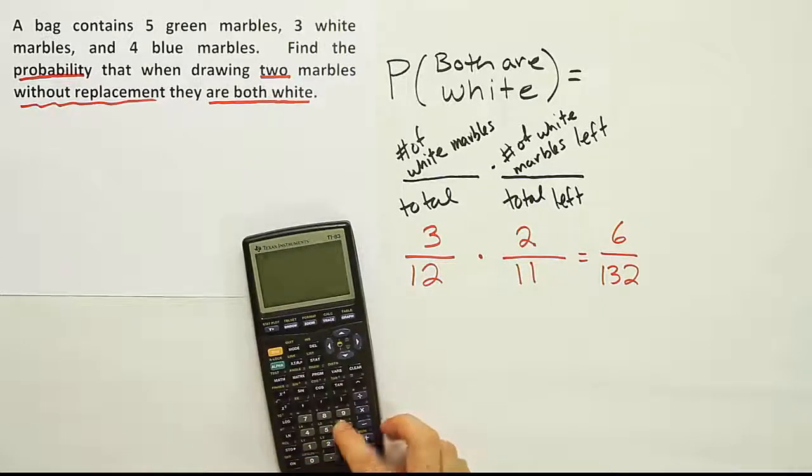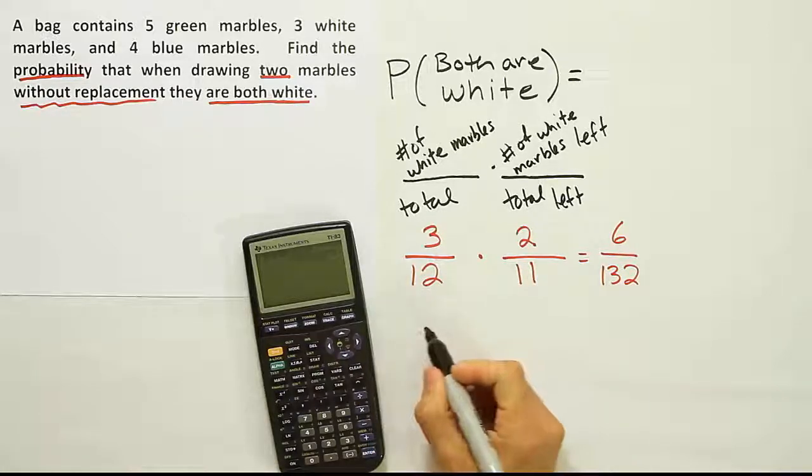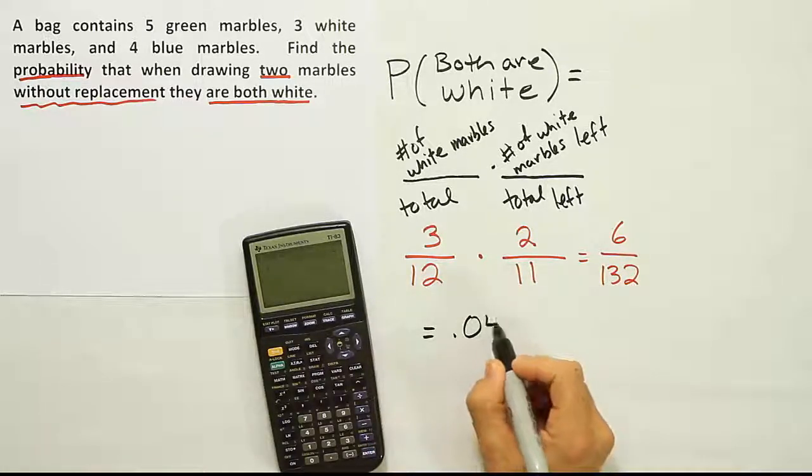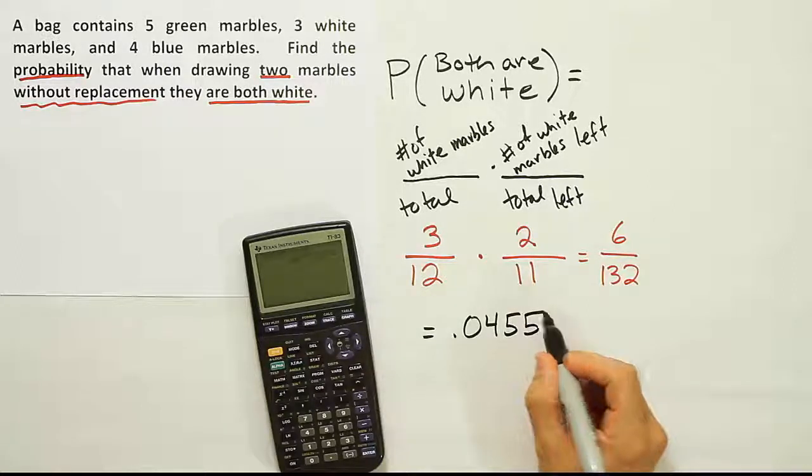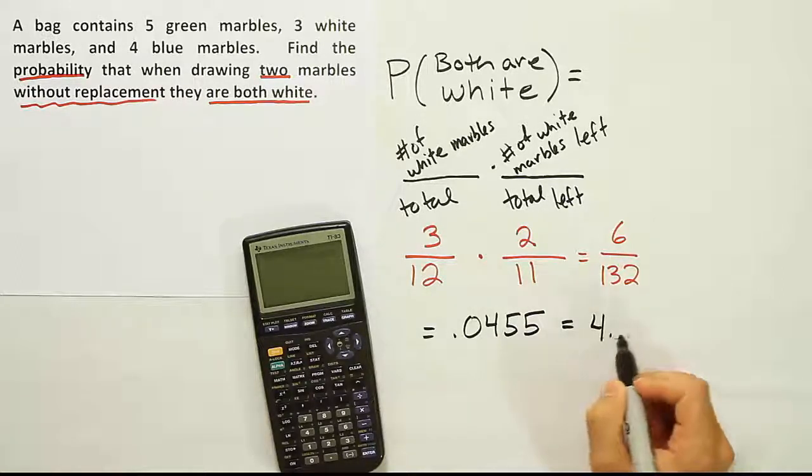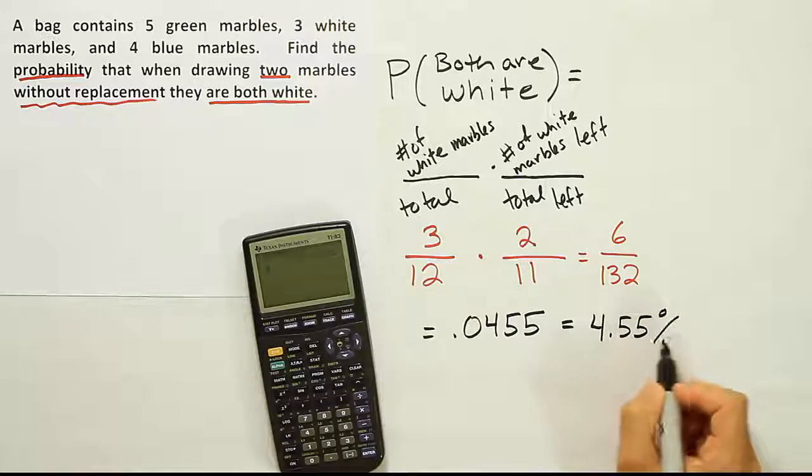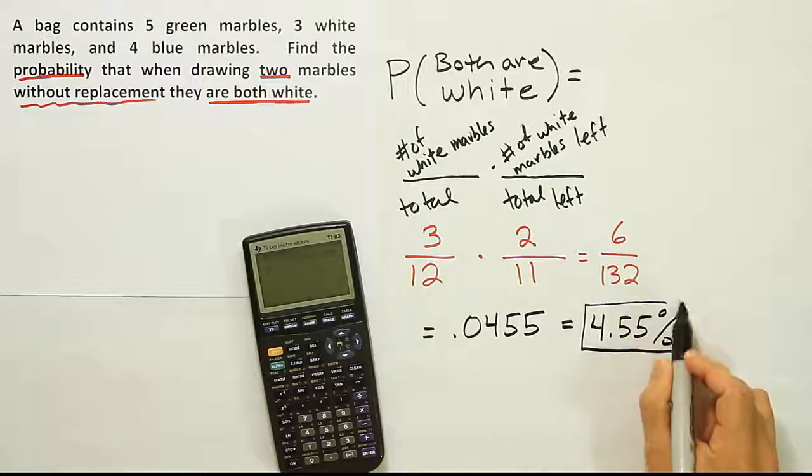So we will have six divided by 132, and the final solution then becomes basically 0.0455, and that's 4.55%. And that's your solution.